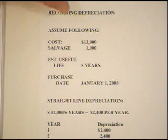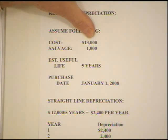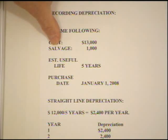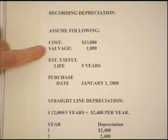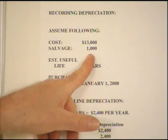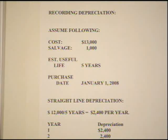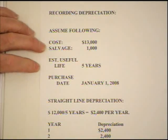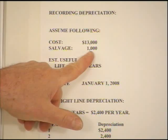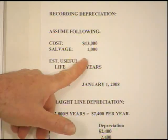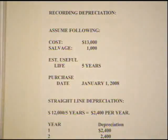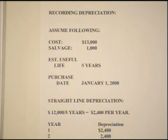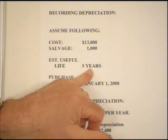First, we need to know the cost — how much we capitalized it for. In this example, that will be $13,000. Second, we need to know the salvage value, also called residual value — what we estimate it will be worth at the end of its useful life. For generally accepted accounting principles we typically have a salvage value, but for income tax accounting we do not use this, so keep that in mind when you take your tax class. In this case, the salvage value is $1,000. Then we need the estimated useful life — how long we think we'll have use out of it — and in this case we're going to use five years.